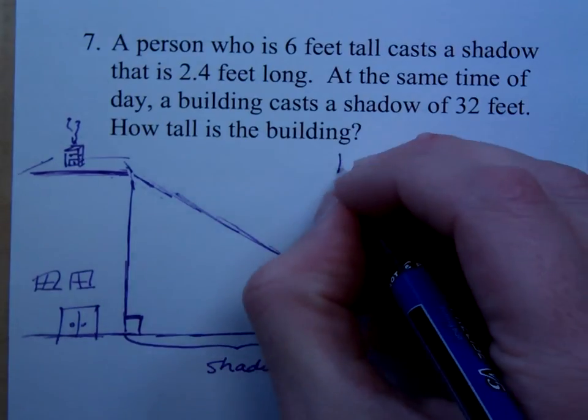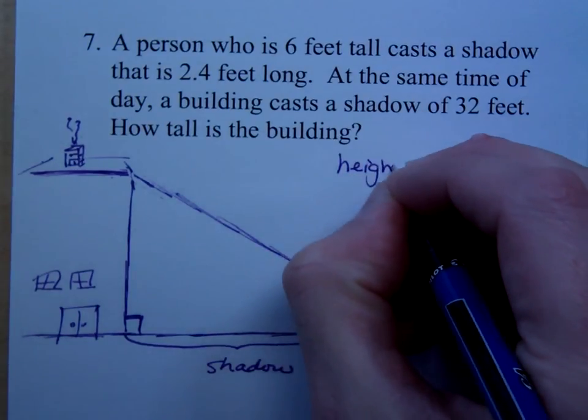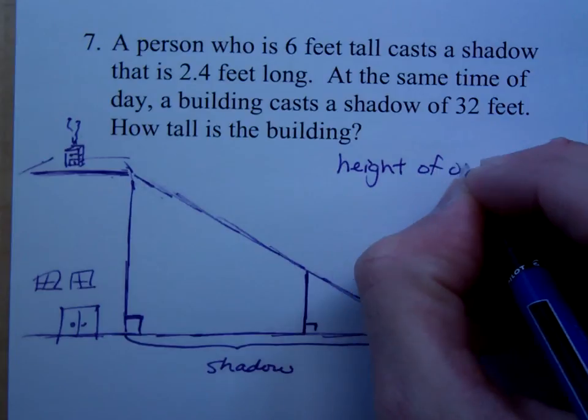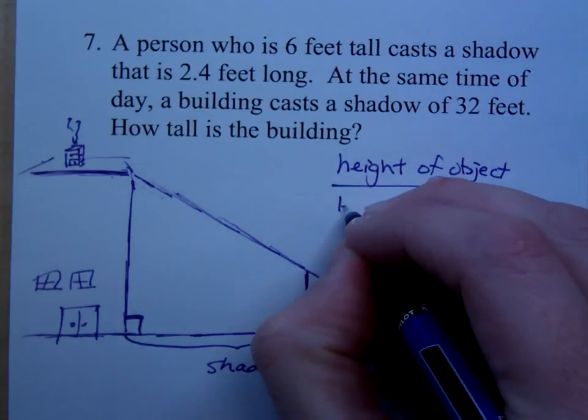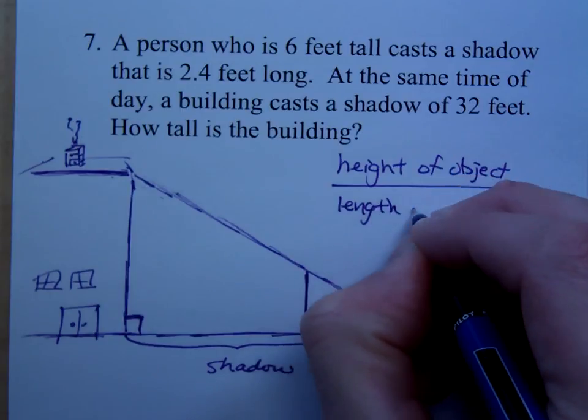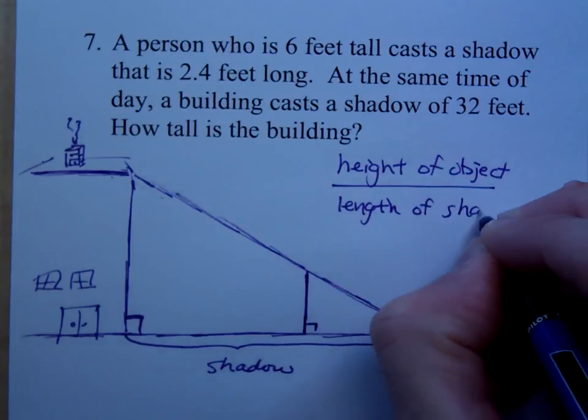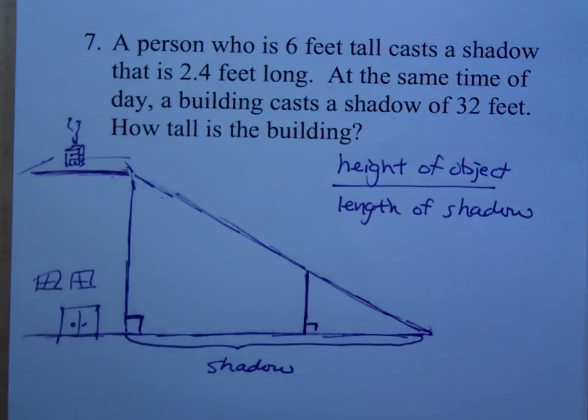So we could do this. We can say the height of the object to the length of the shadow. That's the framework that we're going to be using here. Because think about this, if you were outside on a sunny day, the taller the object is, the longer its shadow is, right?